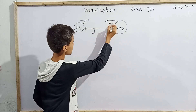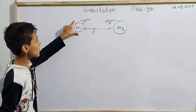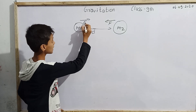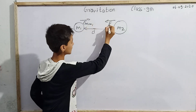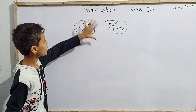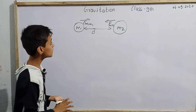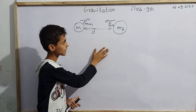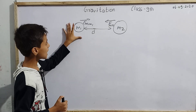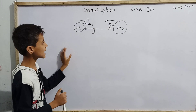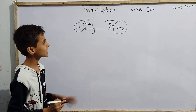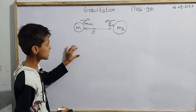The directions of the forces are opposite — m1 will apply a force on m2 and m2 will apply a force on m1. The magnitude of those forces is f. Each object in the universe attracts every other object with a force that is proportional to the product of their masses and inversely proportional to the square of the distance between them. This is the universal law of gravitation.